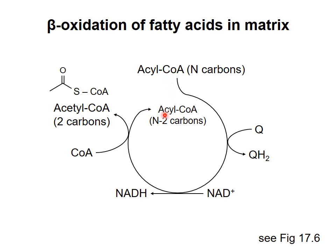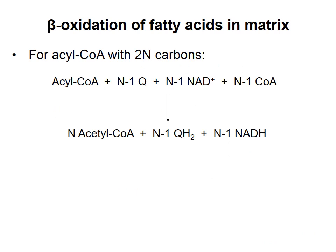That shorter acyl-CoA will undergo another round of four reactions, in which two more carbons are removed from the chain, producing QH2 and NADH. The cycle repeats until all carbons are in the form of acetyl-CoA. The number of cycles depends on the length of the original acyl chain. For example, if we start with an eight-carbon chain, then we will need three turns of the cycle, with the last cycle producing two molecules of acetyl-CoA.